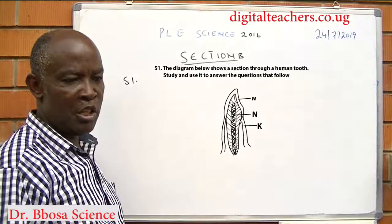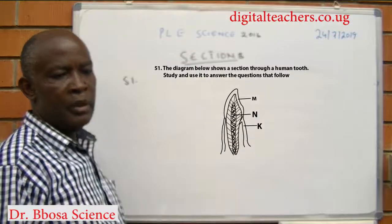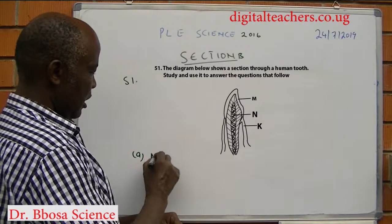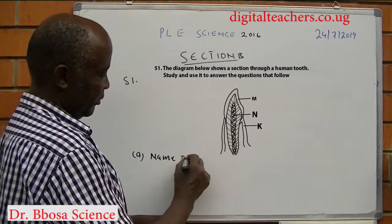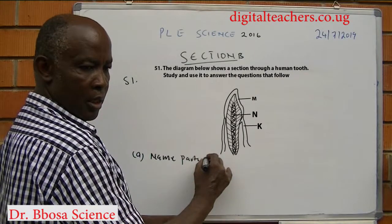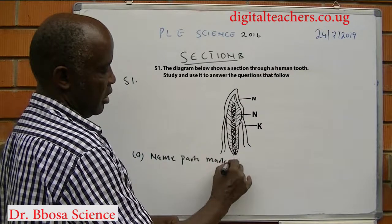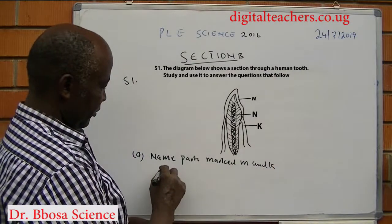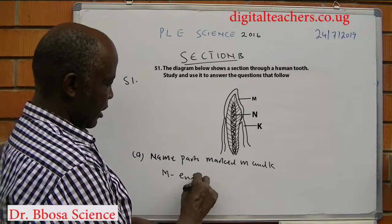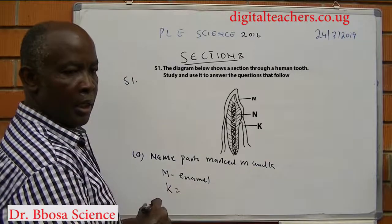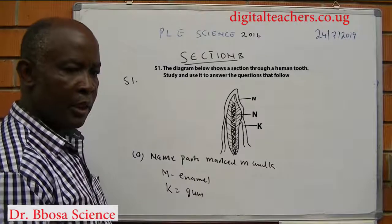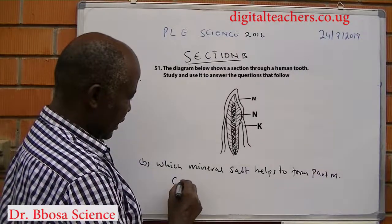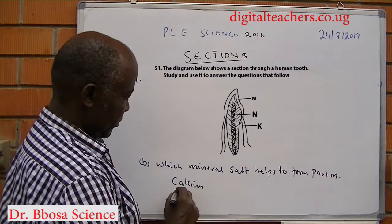Number 51: the diagram below is a section through a human tooth. Name parts marked M and K. M is the inner dentine. K is the enamel. Which mineral salt helps to form part M? That is calcium and phosphorus.